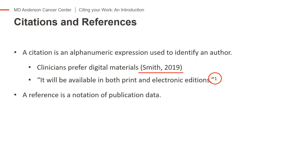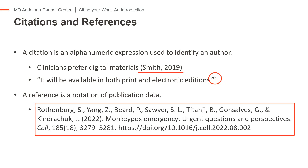Citations in the body of the paper correspond to complete references included at the end of the paper. A reference details a source's publication information. This example outlines publication information about a journal article. It includes author names, article title, journal name, and more.